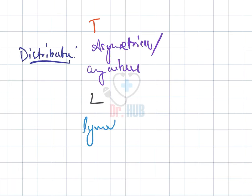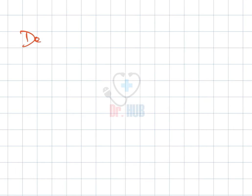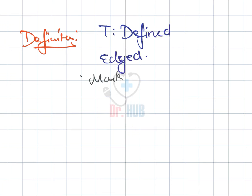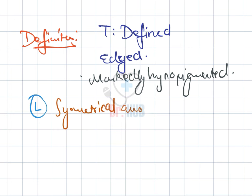In case of L, distribution is symmetrical and avoids certain areas. The definition in T is a defined edge and markedly hypopigmented. In L, it is symmetrical, avoiding certain areas.